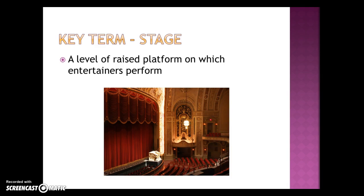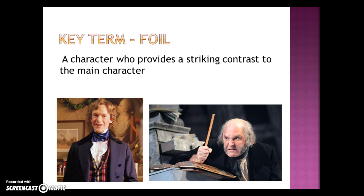The stage is the raised platform on which entertainers perform, and you saw that at the Rialto Theater — this is actually a picture of that. Foil characters are characters that provide a striking contrast to the main characters. We saw this in A Christmas Carol with Fred, the nephew, who was happy and excited about Christmas, contrasting with the main character Scrooge, who really did not like Christmas whatsoever and was a complete bah humbug.